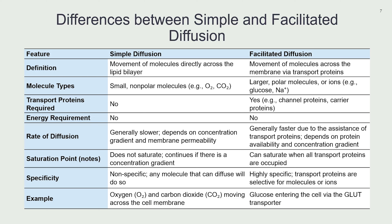Sometimes the best way of studying things is by comparing with other things that may look similar. How do we understand the difference between simple and facilitated diffusion? We already mentioned what is simple diffusion — now compare those concepts with facilitated diffusion. Here we have molecules that move across membranes, but they need to use transport proteins. The same concept repeated: small, non-polar molecules use simple diffusion; large, polar molecules or ions will need a transporter.